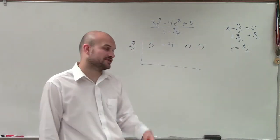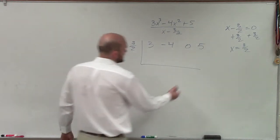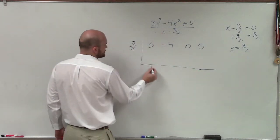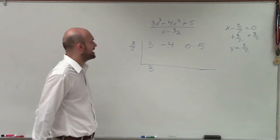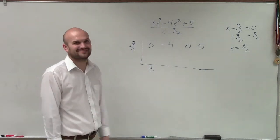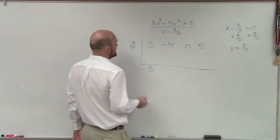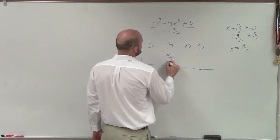Now what I'm going to do is, again, by applying the synthetic algorithm, is just drop down my 3. Now I need to multiply 3 times 3/2. This just looks like fun, doesn't it? 3 times 3/2 is going to be 9/2.